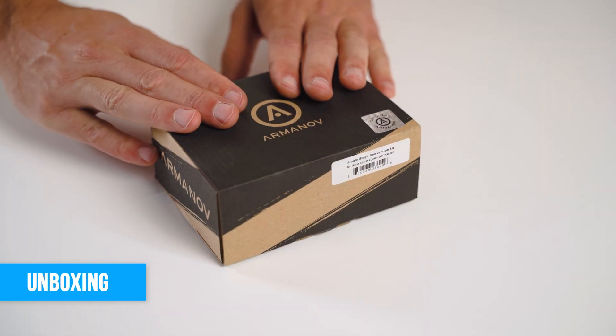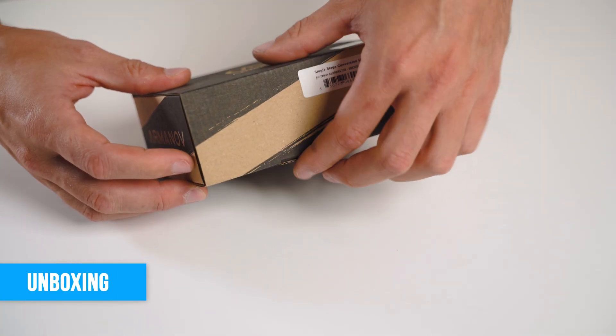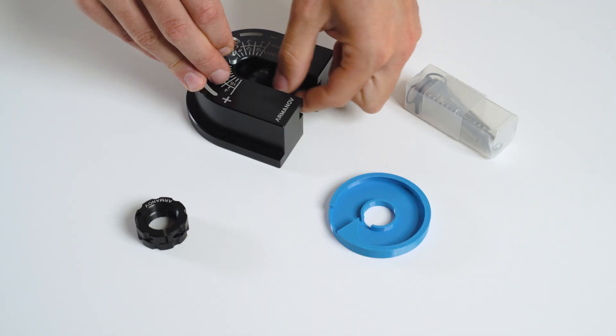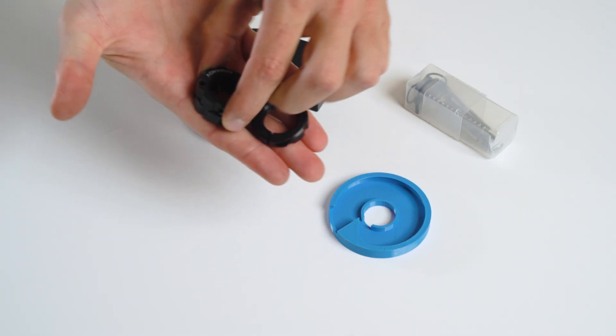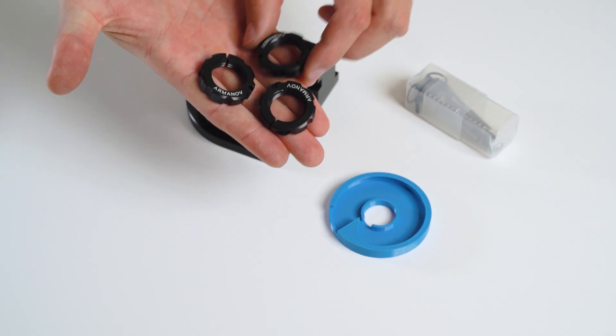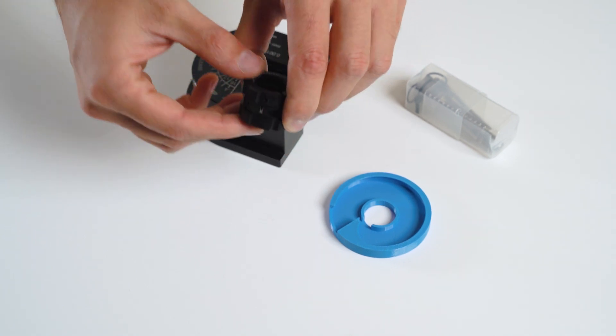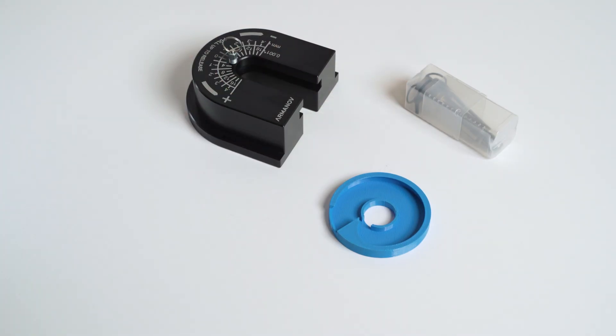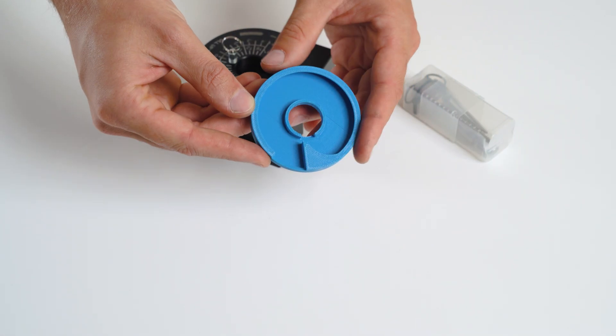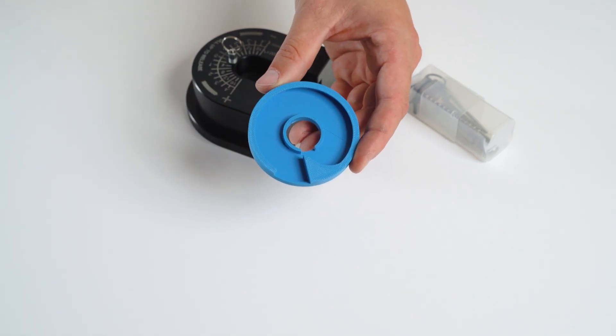Let's check what comes in the box of the single stage conversion kit. First we have three free float locking rings so you can set up multiple dies. Next we have the spent primer tray so you will not have a mess when decapping brass.